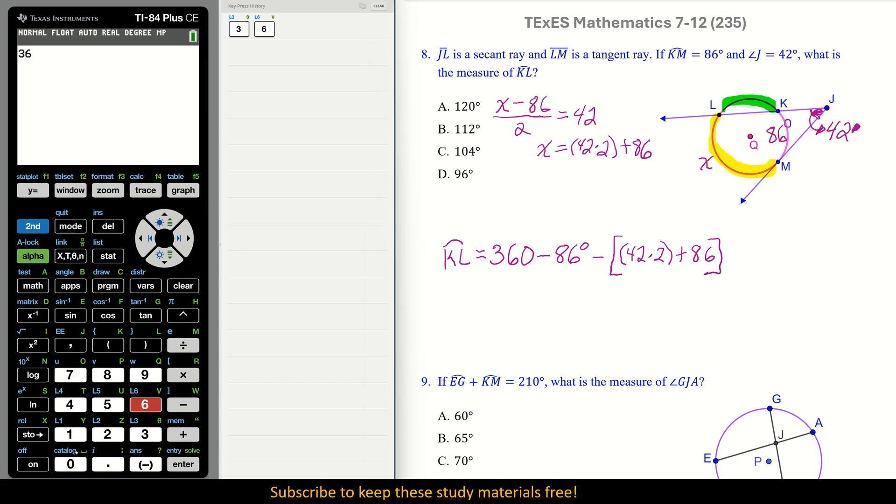So we have 360 minus 86 minus, double parentheses, 42 times 2, close the parentheses, and then add the 86, close it, and see how, I could have distributed my negative, but if you know you have a good format and you know you can put in your calculator, why not do it so you see it and there are no mistakes made? And you press enter and we have option C. Perfect.